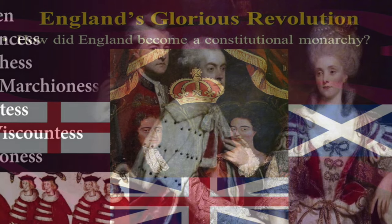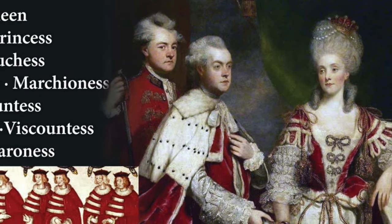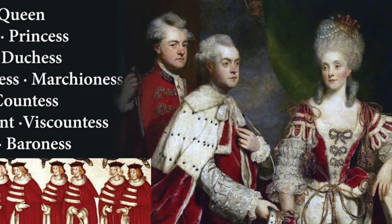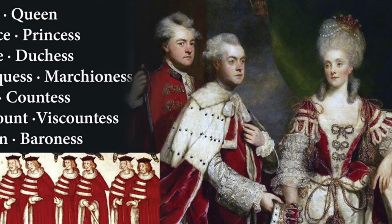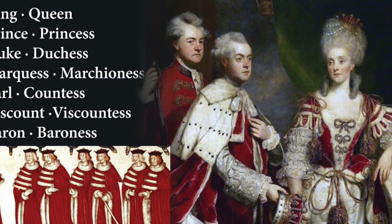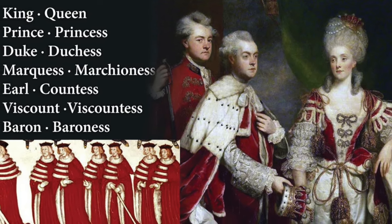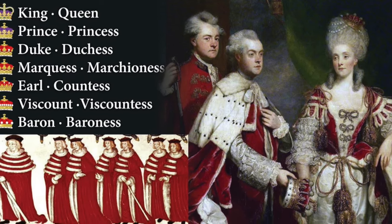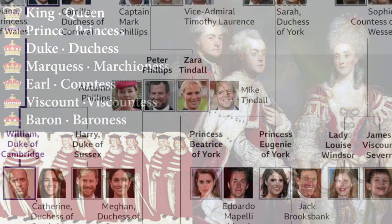Here is the hierarchy of English aristocrats in ascending order: a baron or baroness, a viscount or viscountess, an earl or countess, a marquess or marchioness, and a duke or duchess — with the king or queen at the top.